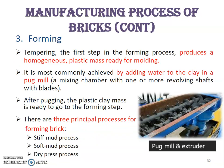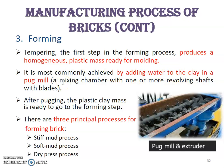The forming process begins with tempering. Tempering produces a homogeneous plastic mass ready for molding. It is most commonly achieved by adding water to the clay in a pug mill. After the pugging process, the plastic clay mass is ready to go to the forming step.